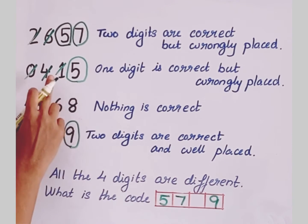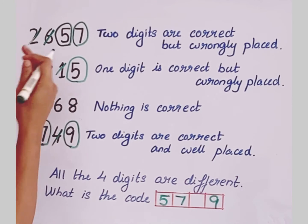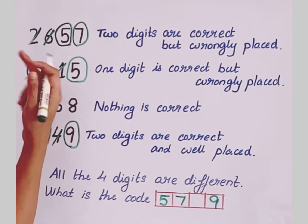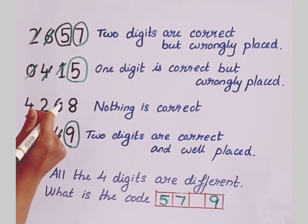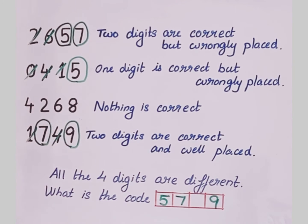So in the code, if 1, 0, 2, 4, 6, 8 - if it doesn't appear, then the remaining is 3. So the remaining position has to be 3. Hence the answer is, the four-digit code is 5739.